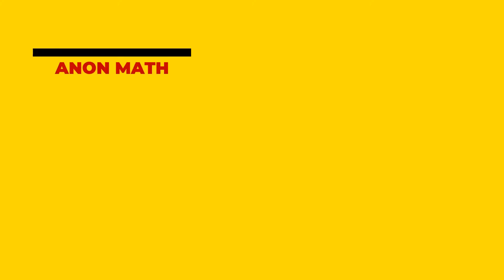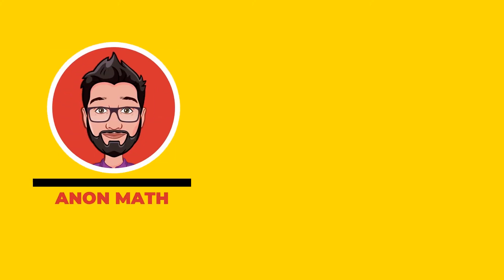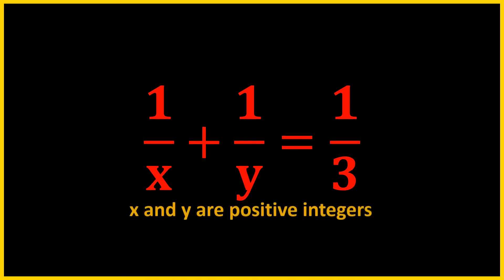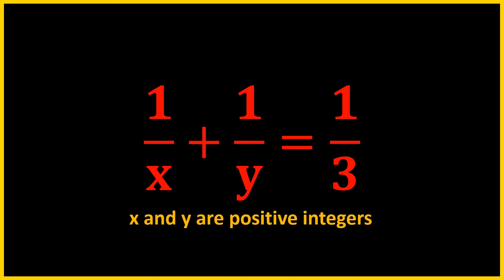Hello everyone, this is Anand from Men and Mass Channel. In this video we're going to take a look at a Diophantine equation, and we're going to solve this Diophantine equation by factoring. We are given that 1 over x plus 1 over y equals one-third, such that x and y are positive integers.